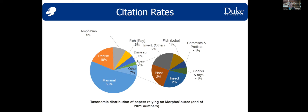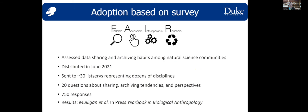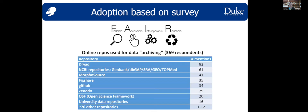We're focused on biological datasets, so we have pretty broad taxonomic distributions representing animals and animal diversity. We also administered a survey last year assessing data sharing and archiving habits among natural science communities. It was sent to 30 listservs representing dozens of disciplines, from anthropology to fish, and we got about 750 responses — results are in press. We asked respondents what resources they'd used for data archiving, with no options to select and no leading. Kudos to Dryad — you were the top-mentioned repository, demonstrating the impact you're having on the community.